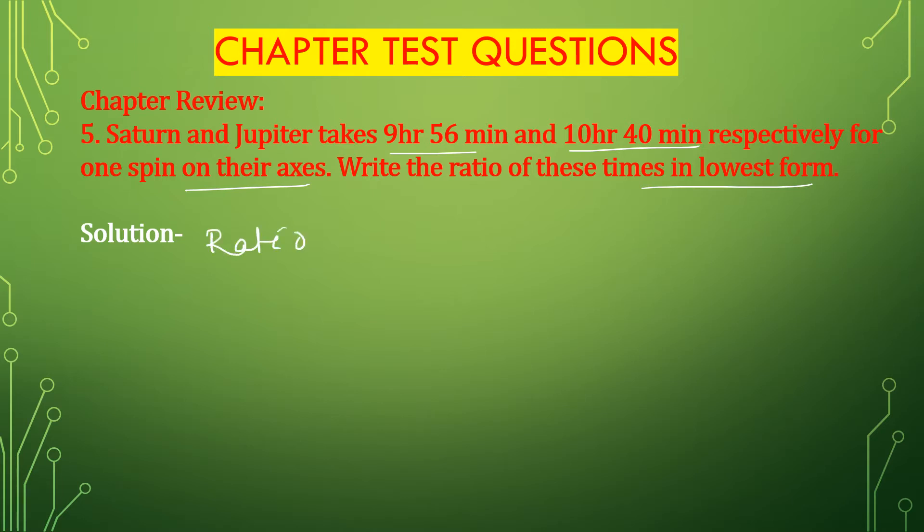The ratio will be Saturn's time to Jupiter's time. Saturn takes 9 hours 56 minutes and Jupiter takes 10 hours 40 minutes for one spin on their axes. Here the antecedent is in hours and minutes, so first we have to convert the hours into minutes. So 9 multiplied by 60.